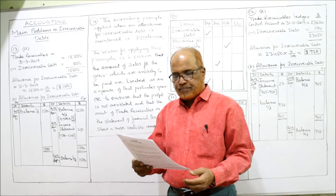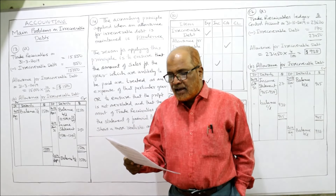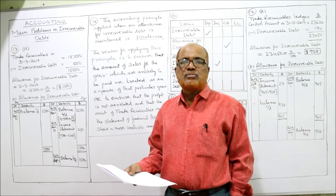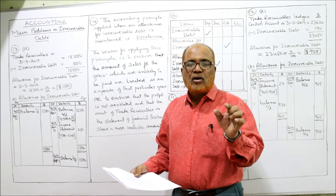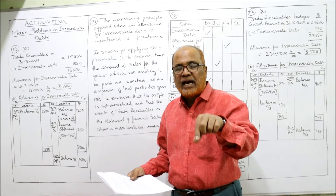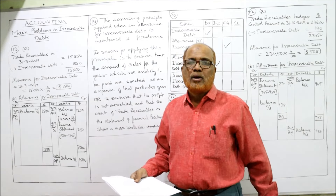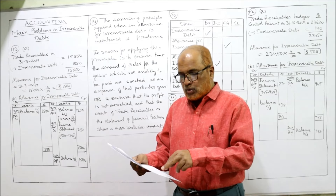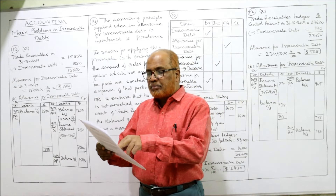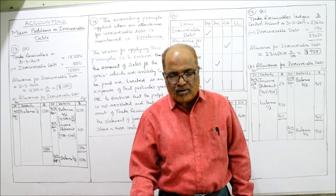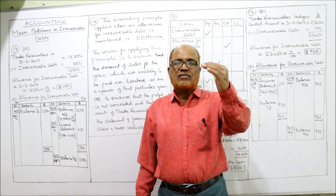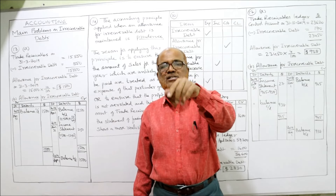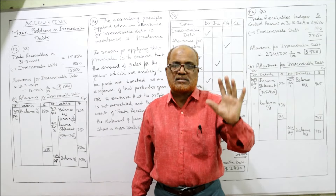The last and final question of problem 13 is a theoretical question: name one accounting principle which is applied when an allowance for irrecoverable debt is maintained. As we have discussed many times, the accounting concept used when providing an allowance for irrecoverable debt is prudence. The prudence accounting concept is applied for calculating the allowance for irrecoverable debt — that is the first answer complete.